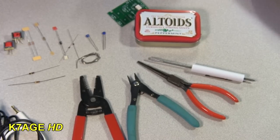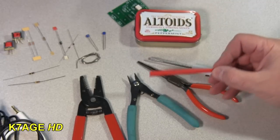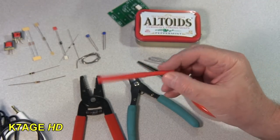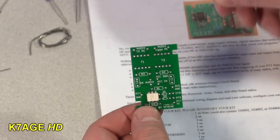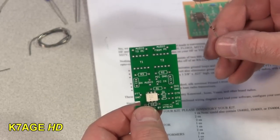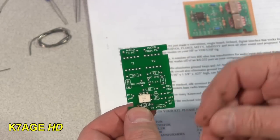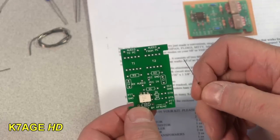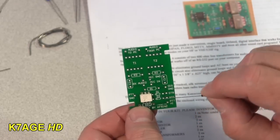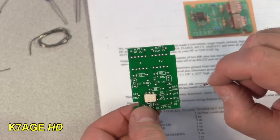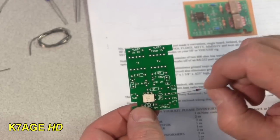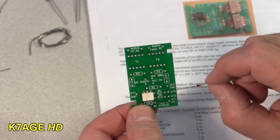Okay, step one of the instructions is to mount two of the 1N4148 diodes right here on the board. You have to watch for the black line to line up with the little line that's on the circuit board here.